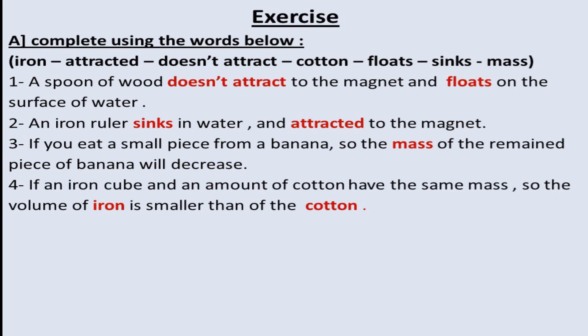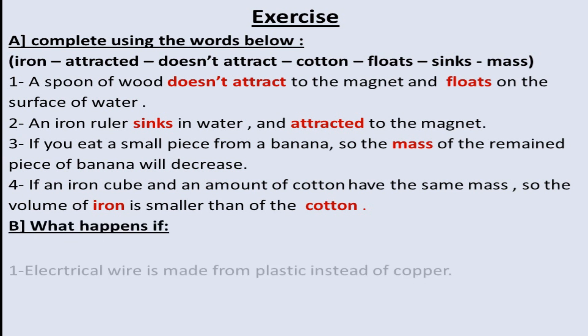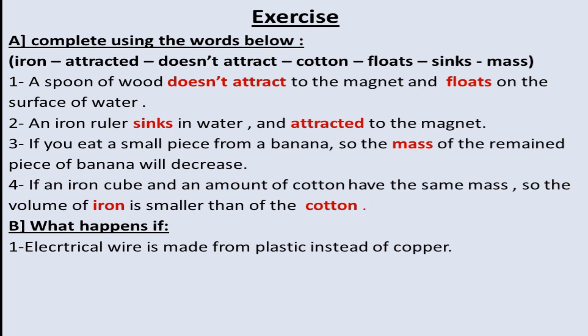Number 4: if an iron cube and an amount of cotton have the same mass, the volume of the cotton must be larger. حجم القطن هيكون هو الأكبر — so the volume of the iron is smaller than the volume of the cotton. Do you understand the idea here?